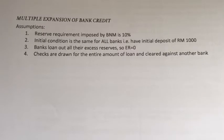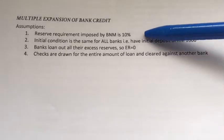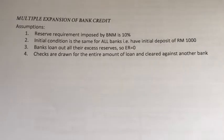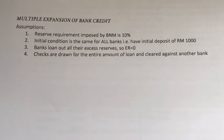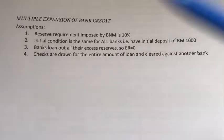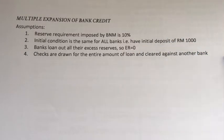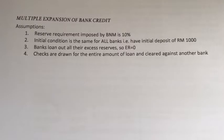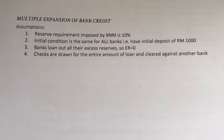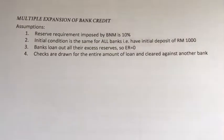To continue our example of the fractional reserve system and how it works, several assumptions have to be made. Number one, the reserve requirement imposed by the central bank on all commercial banks is 10%. Secondly, the initial condition is the same for all banks — every bank will have an initial deposit of 1,000 ringgit. Thirdly, banks will lend out all of their excess reserves, meaning zero excess reserves. And fourthly, checks are drawn for the entire amount of loan and cleared against another bank. These assumptions are quite exaggerated to really show how the fractional reserve system causes multiple expansion of bank credit.